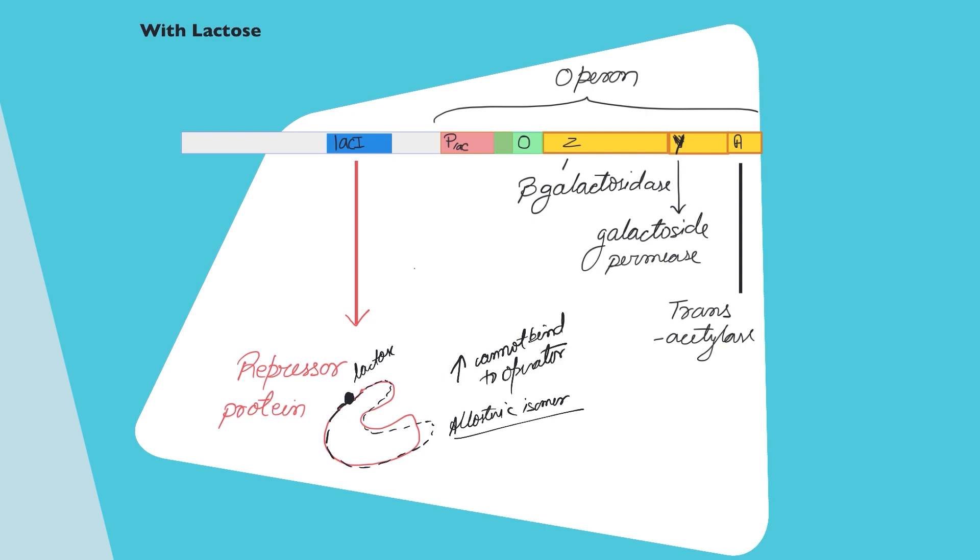Because it cannot bind to operator, the RNA polymerase will bind. It used to bind previously, but it could not proceed because there was a block at the operator region caused by the repressor protein. But now that there is no repressor protein, there won't be any block and the RNA polymerase would proceed,